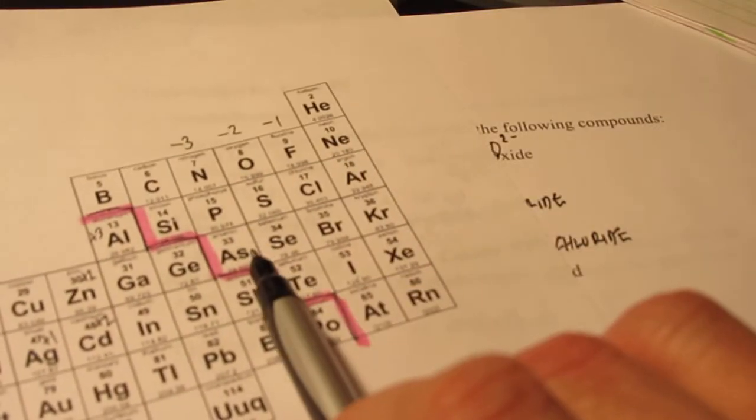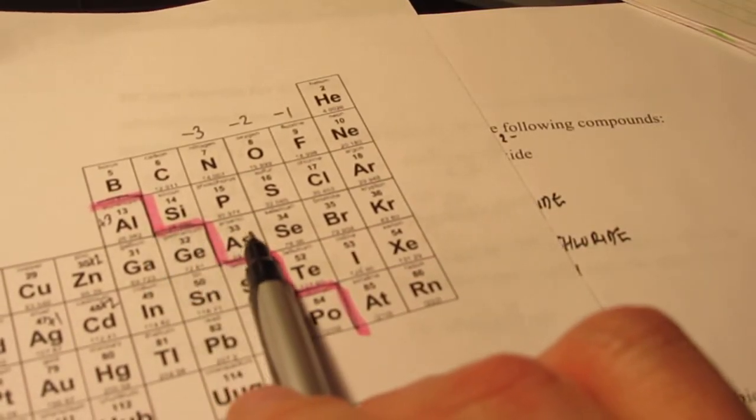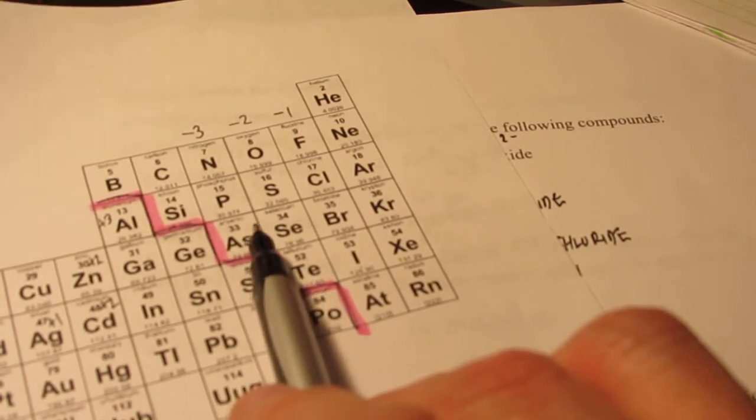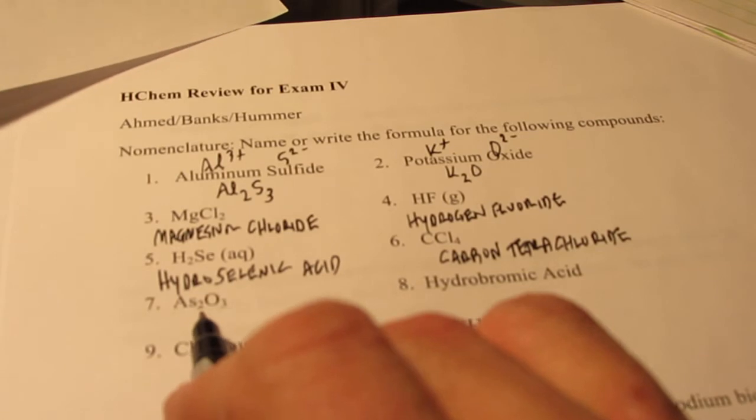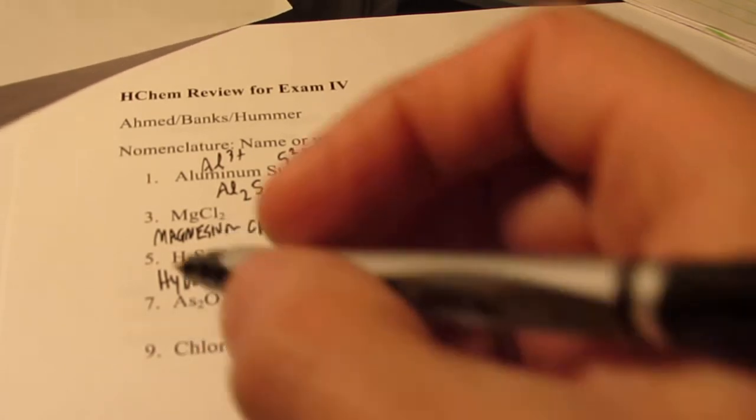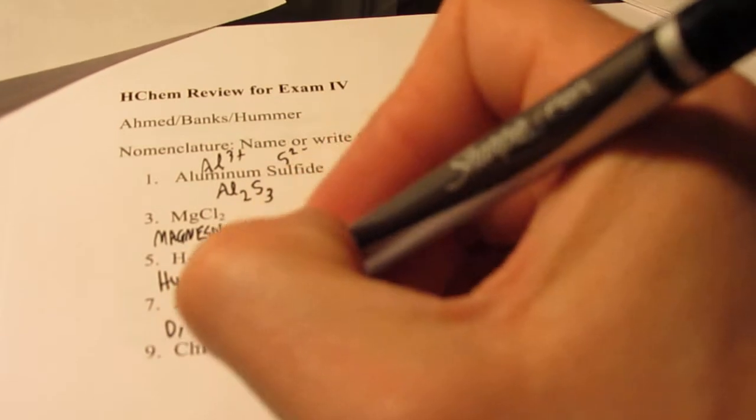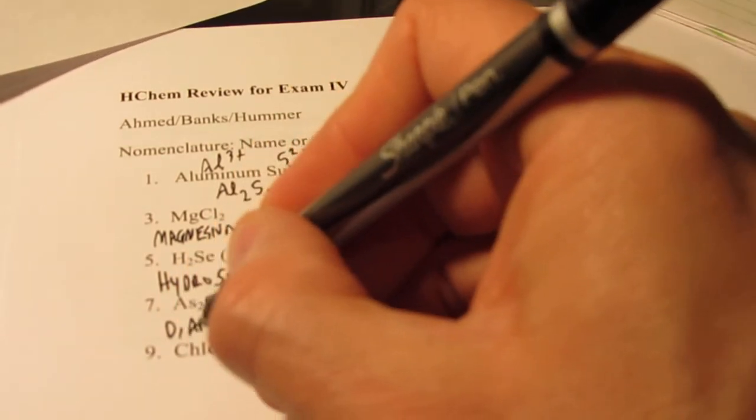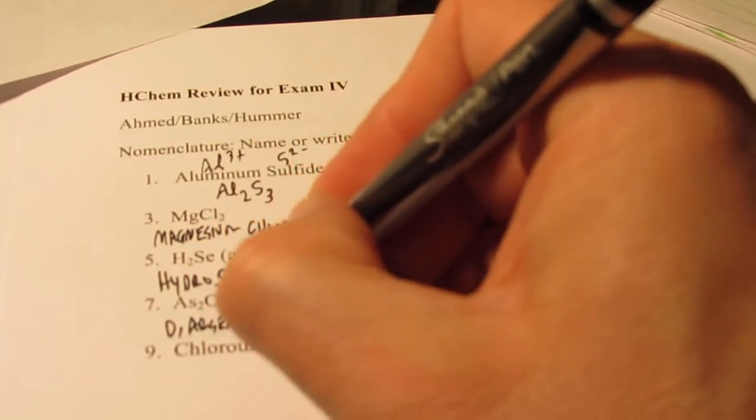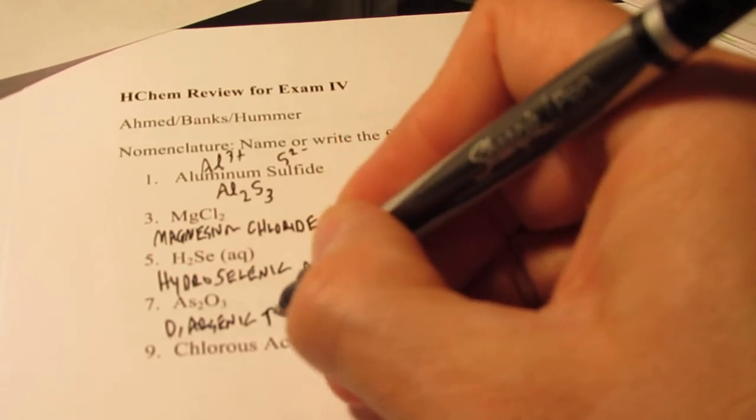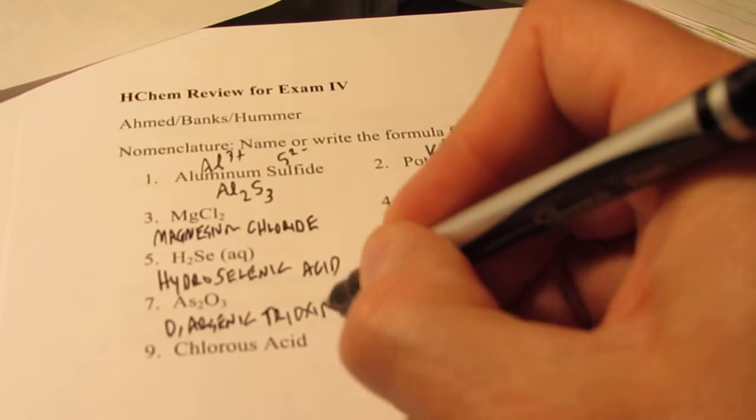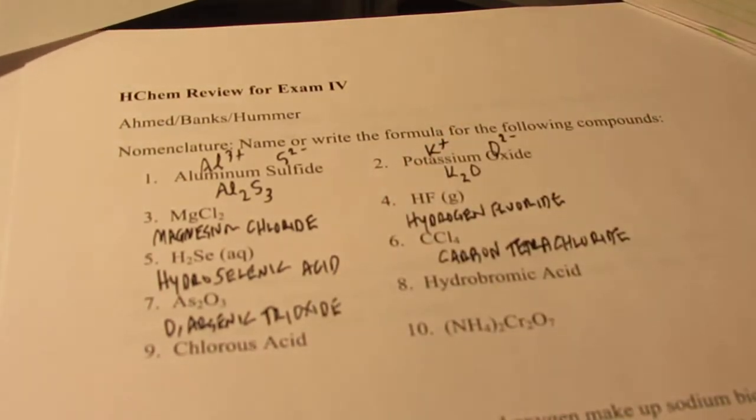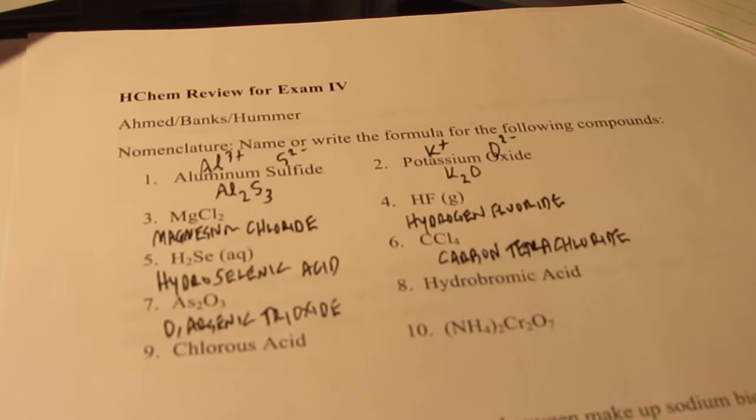Number seven, As2O3. Arsenic. Yes, I know it's a metalloid, but it's on the right of that line, which means we can go ahead and use the covalent rules, which we can use prefixes on. So As is a non-metal and so is O. So the prefix for two is di, and As is arsenic. And the prefix for three is tri. And that's oxygen there. But we want to end it with ide. All binary compounds end with ide. So diarsenic trioxide.